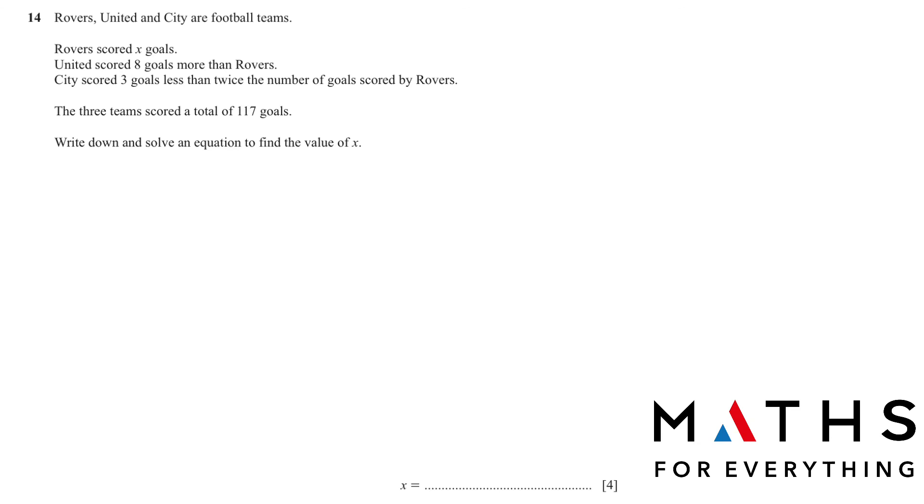Question number 14. When you look at the question you might think that this is a difficult question. Don't assume that it's difficult. Read the question slowly, slowly what you understand. Write it down and solve it. It's easy. Rovers United and City are football teams. There are three. Rovers United and City. Rovers scored eight goals. So Rovers is X goals. And we have United. It scored eight goals more than Rovers. More means what? You are adding. Right? So it is X plus eight.